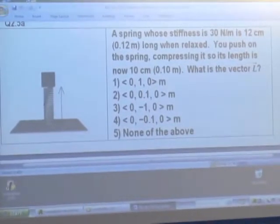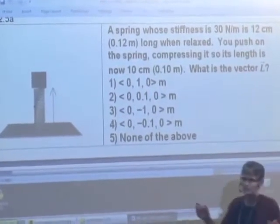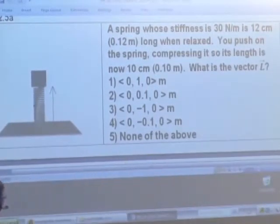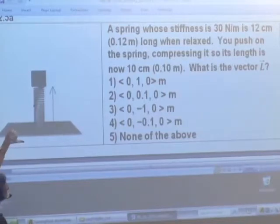It's a vertical spring. Its stiffness is 30 newtons per meter, which means that if you compress it a meter, you'd get a force of 30 newtons, except that since it's only 12 centimeters long, you can't compress it a meter. So the relaxed length is 12 centimeters, 0.12 meters.